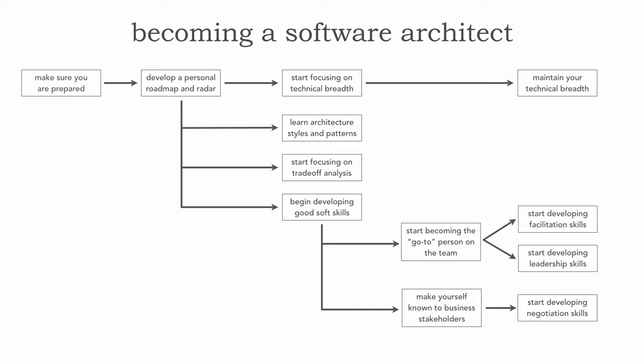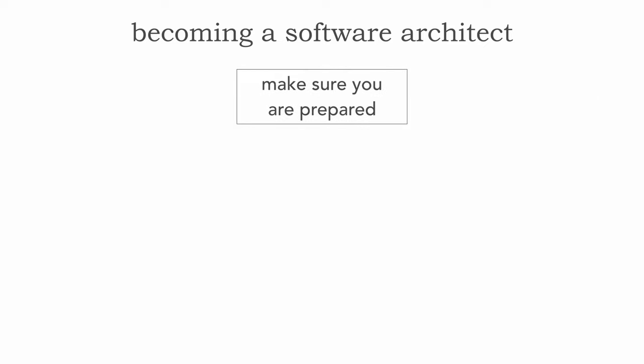In this lesson I want to not only outline this process — because we'll be diving into each of these boxes in future lessons — but also start the process of making sure you're prepared. The first part of this checklist is really making sure you have a passion for creating solutions to business problems. As developers we focus on technology, but as an architect it's about understanding the business problem from both the functional and business perspective, and creating solutions that solve both.